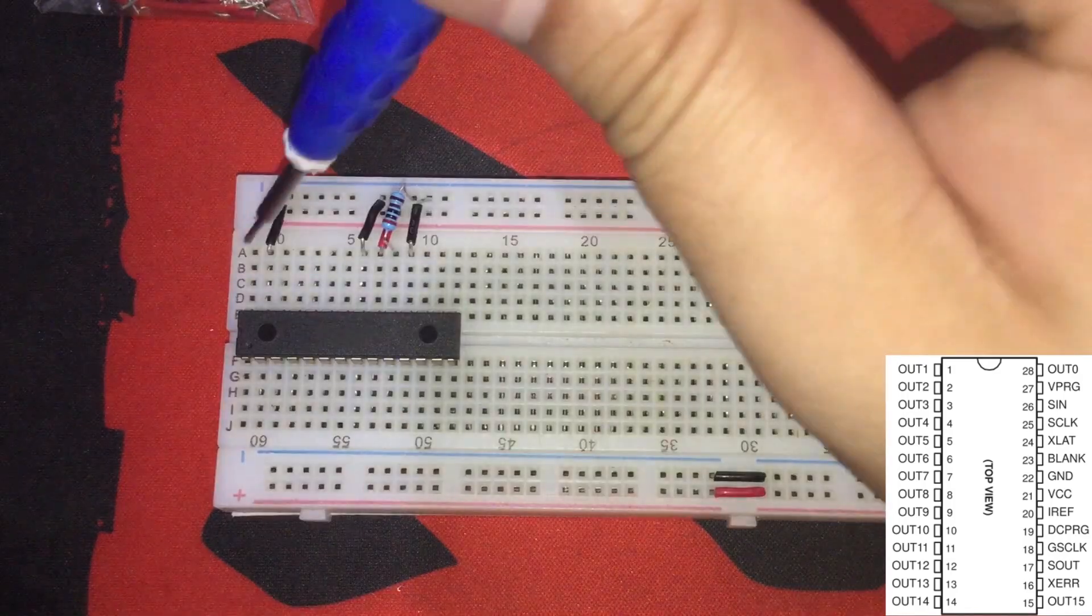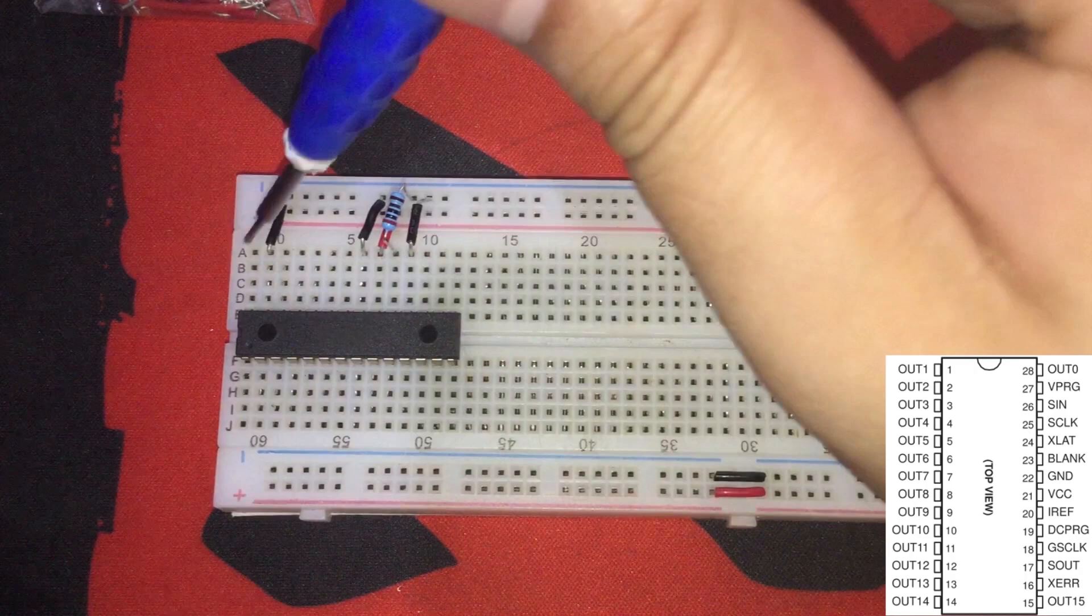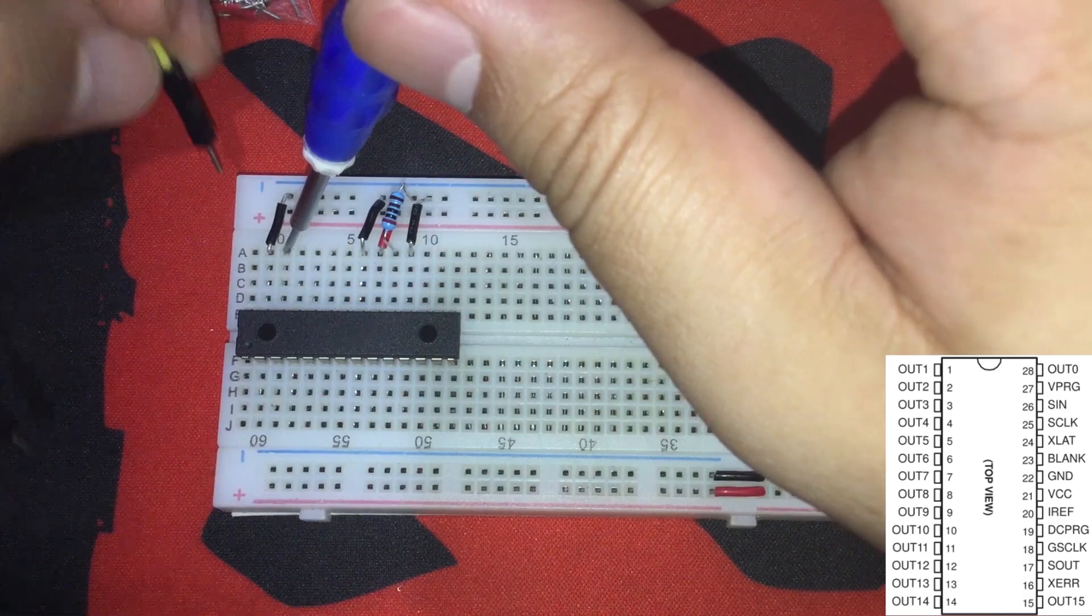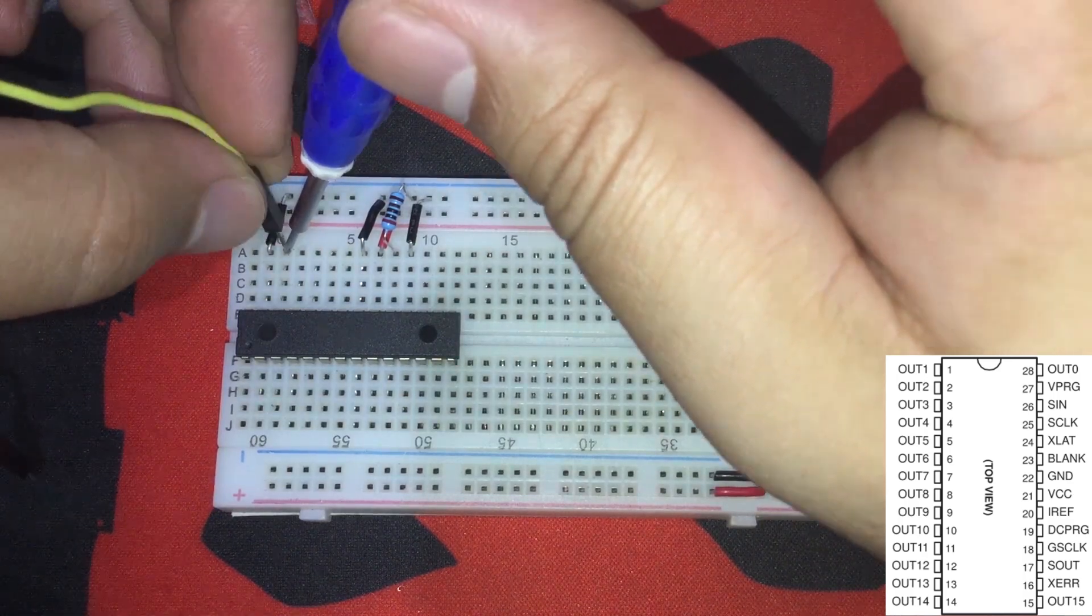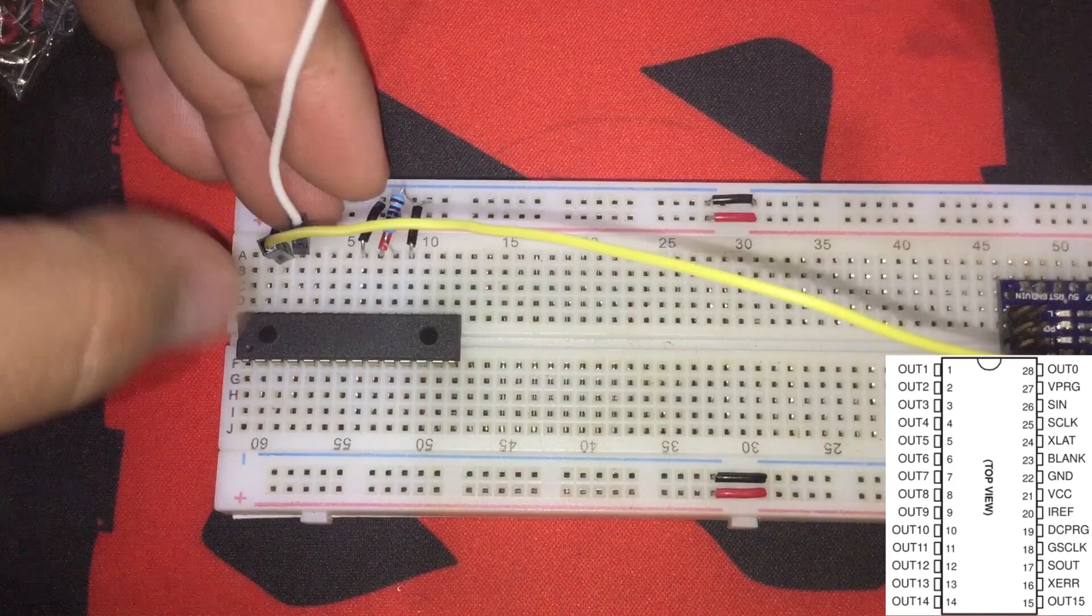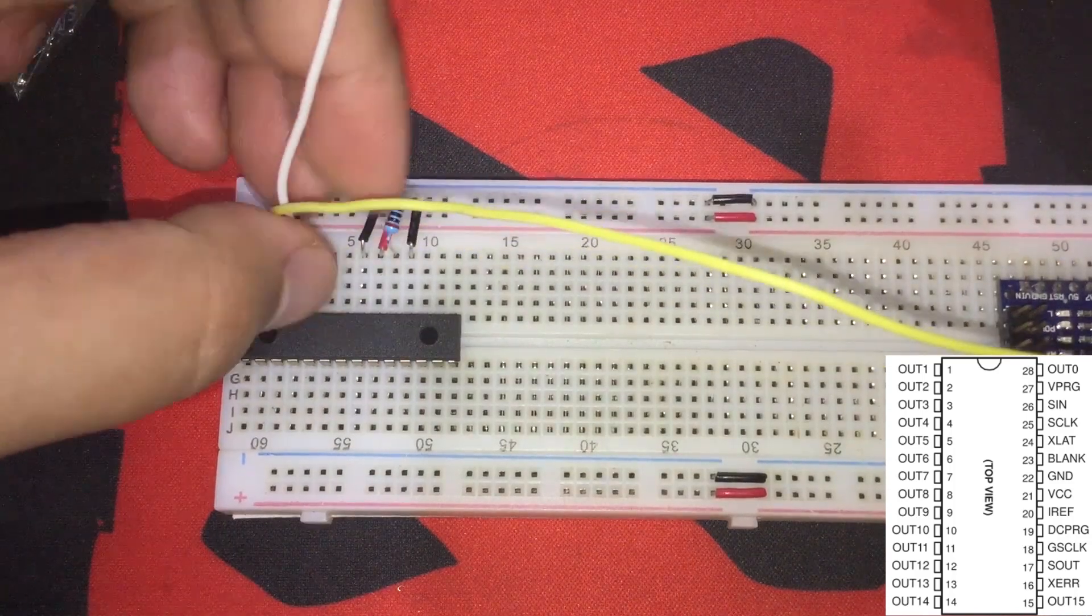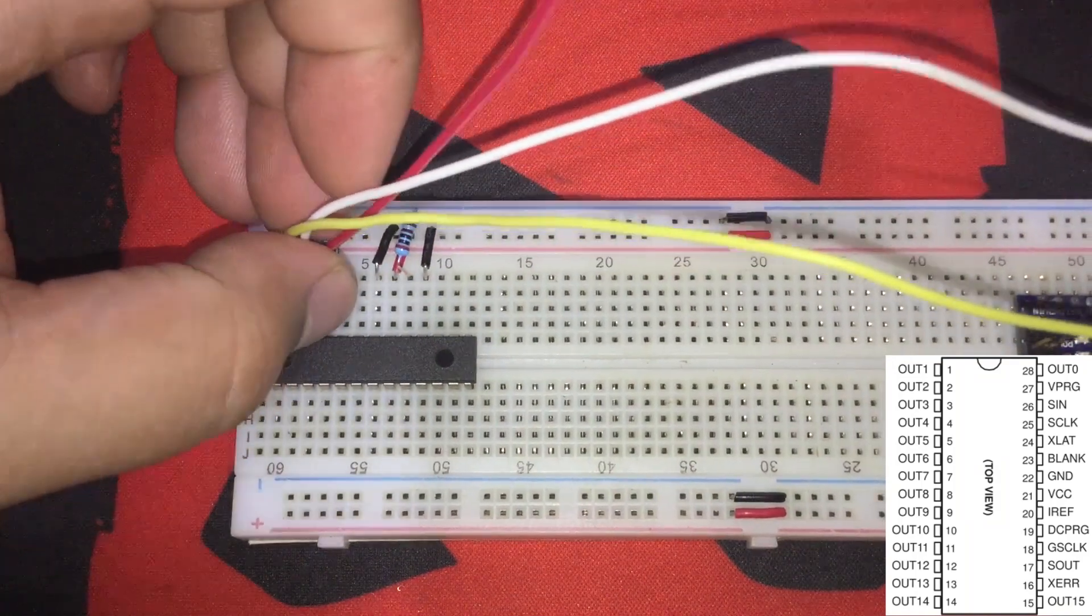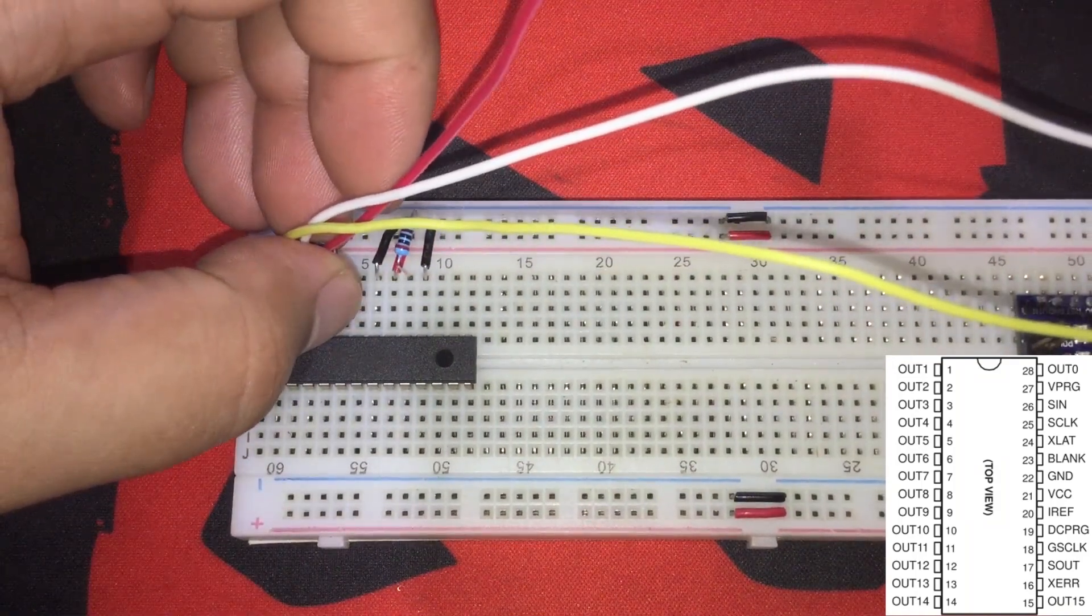Again, this is the first output pin so we won't connect it to anything for now. IC pin number 26 is SYN1 on the schematic. This is connected to pin number 11 on the Arduino. IC pin number 25 is SELK on the schematic and is connected to pin number 13.